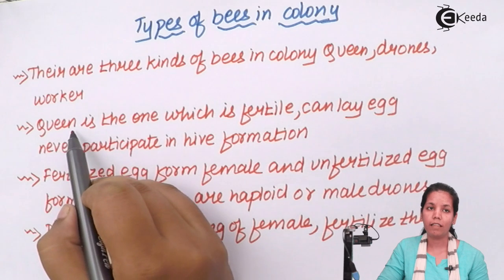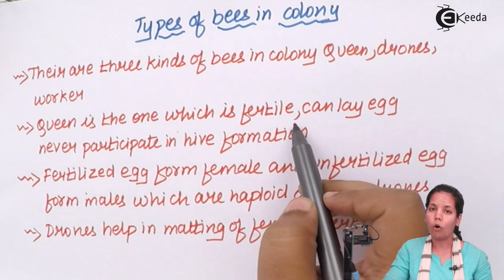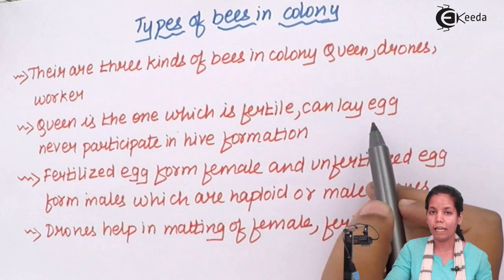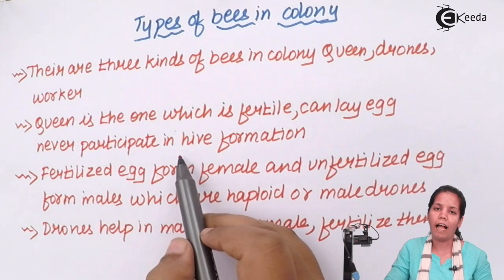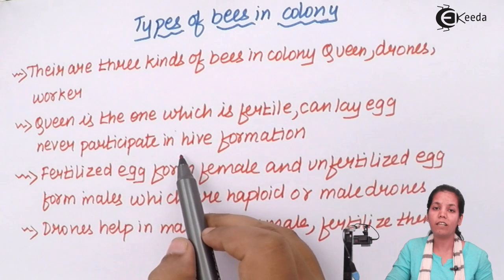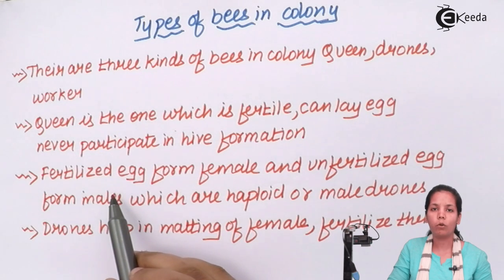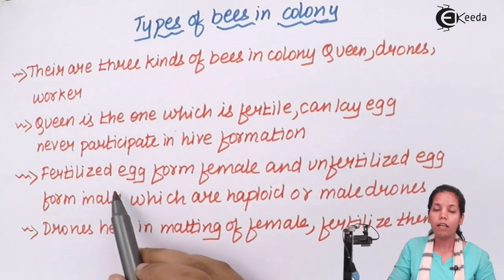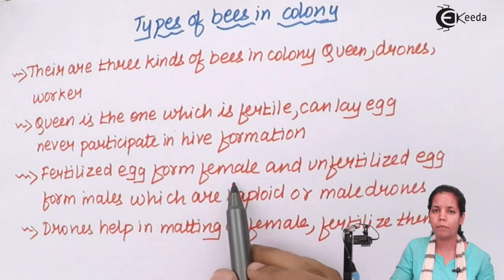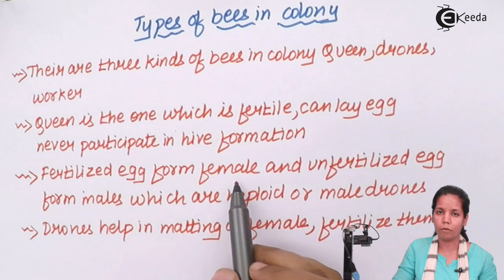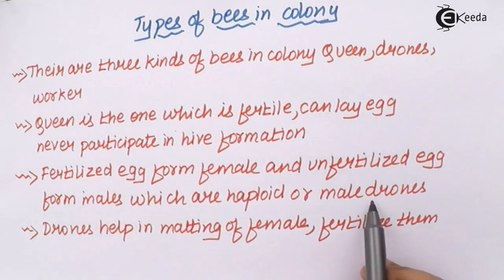If I talk about the queen bee, the name says it all — it's the queen of the honeycomb. They are fertile in nature and can lay eggs which will be used for reproduction purposes. They never participate in hive formation or do any kind of work. Now, if the egg produced by the queen bee is fertilized, mating would happen and the progeny will always be female. But if the gamete produced is not fertilized by the male counterpart, then unfertilized eggs will form the males or haploid cells, simply called drones.